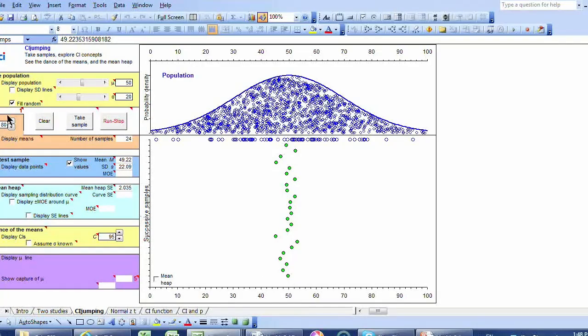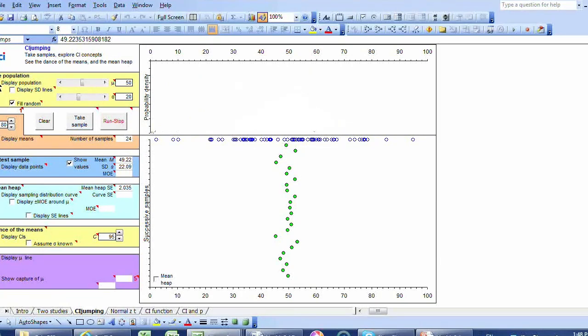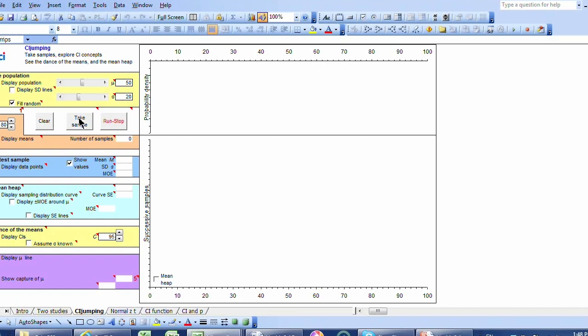So, although in the computer we can play around with the population on the screen, and lots and lots and lots of samples on the screen, in real life, as researchers, we don't know the population, and we only have a single sample. And so all we have are our data points and the calculated mean.